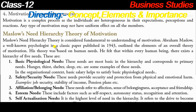Abraham Maslow, a psychologist, in a classic paper published in 1943, outlined the elements of an overall theory of motivation. His theory was based on human needs. He felt that within every human being there exists a hierarchy of five needs.